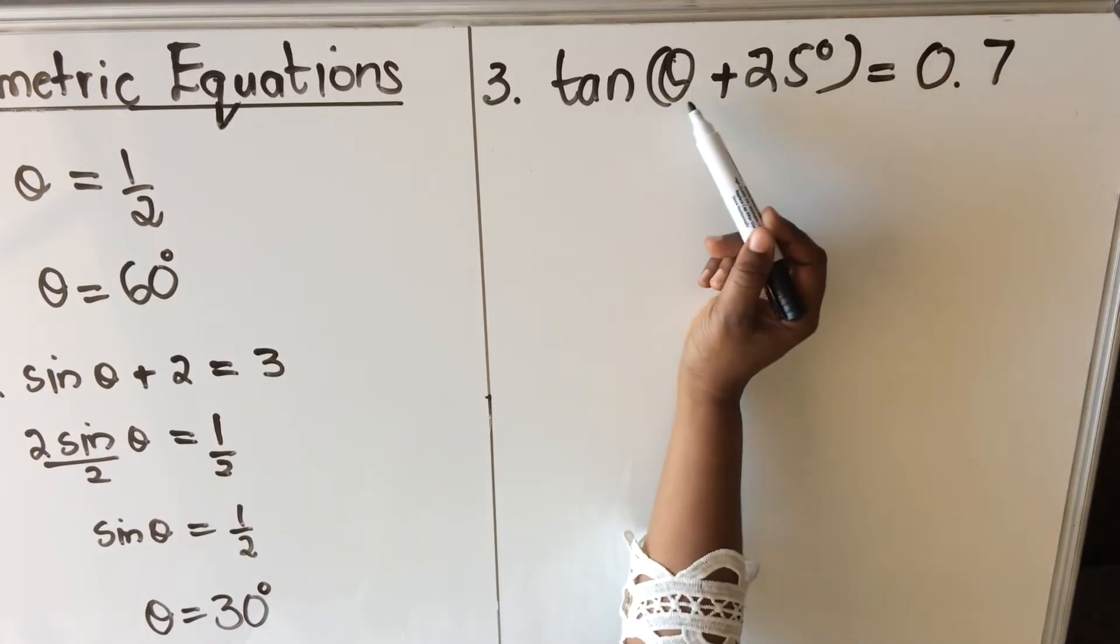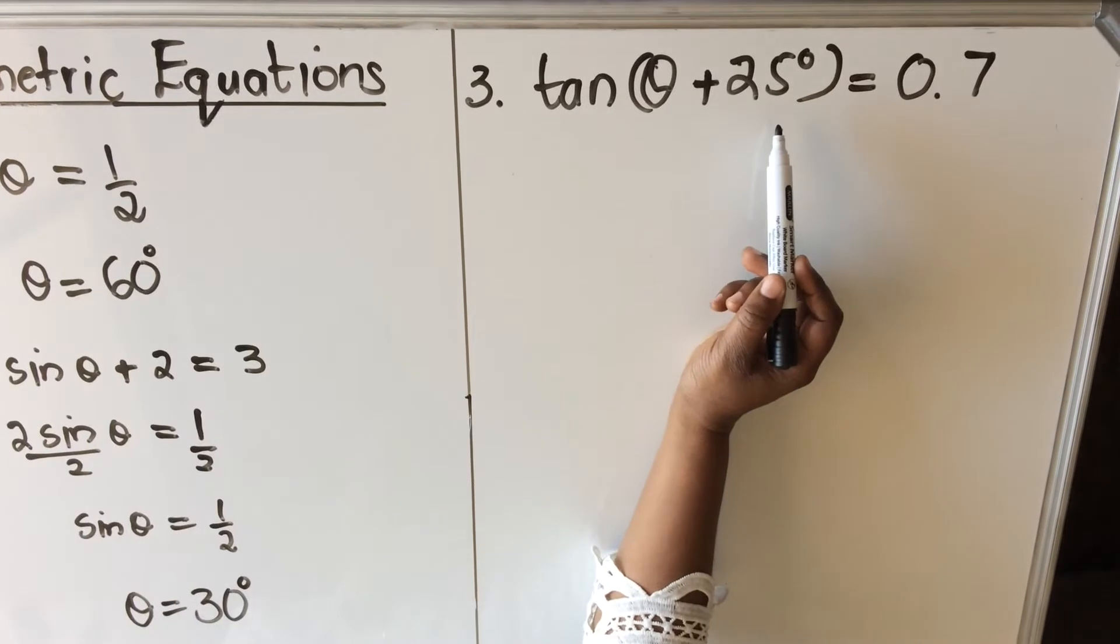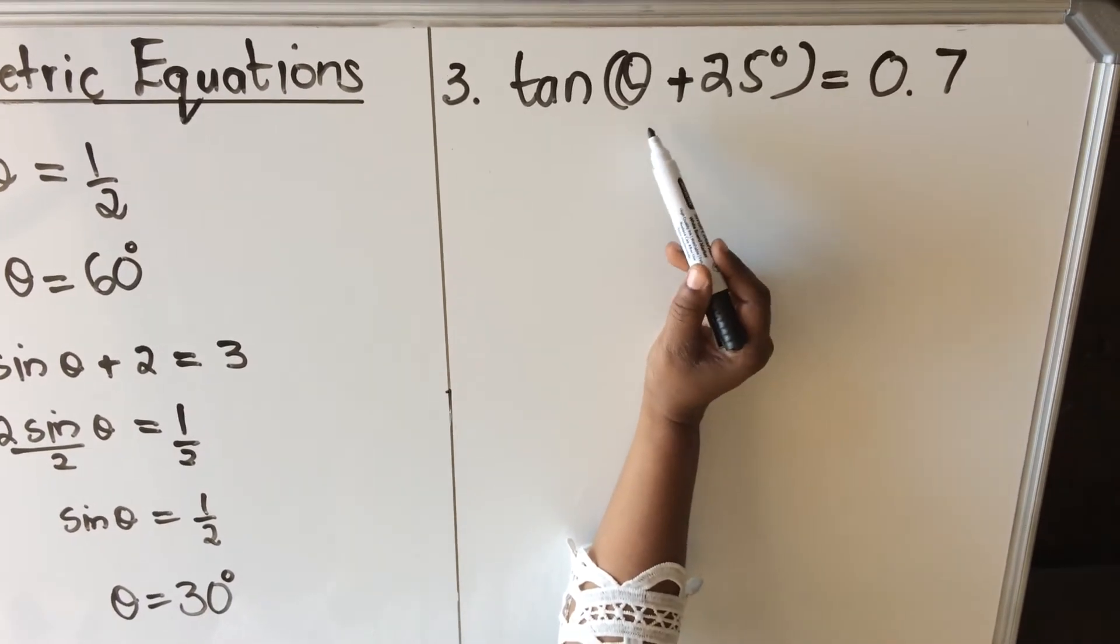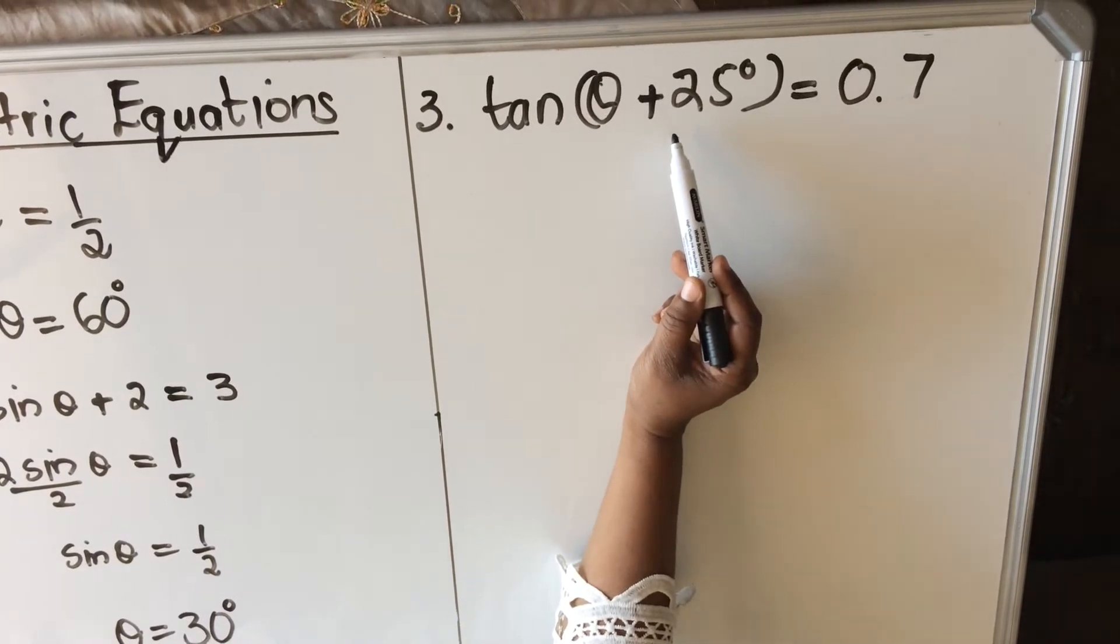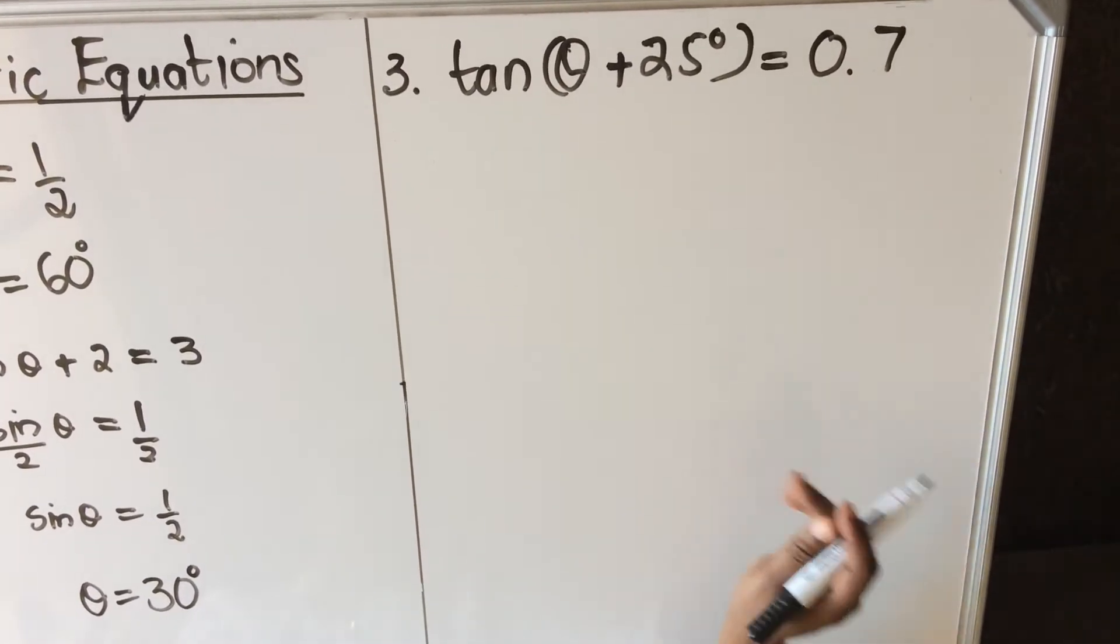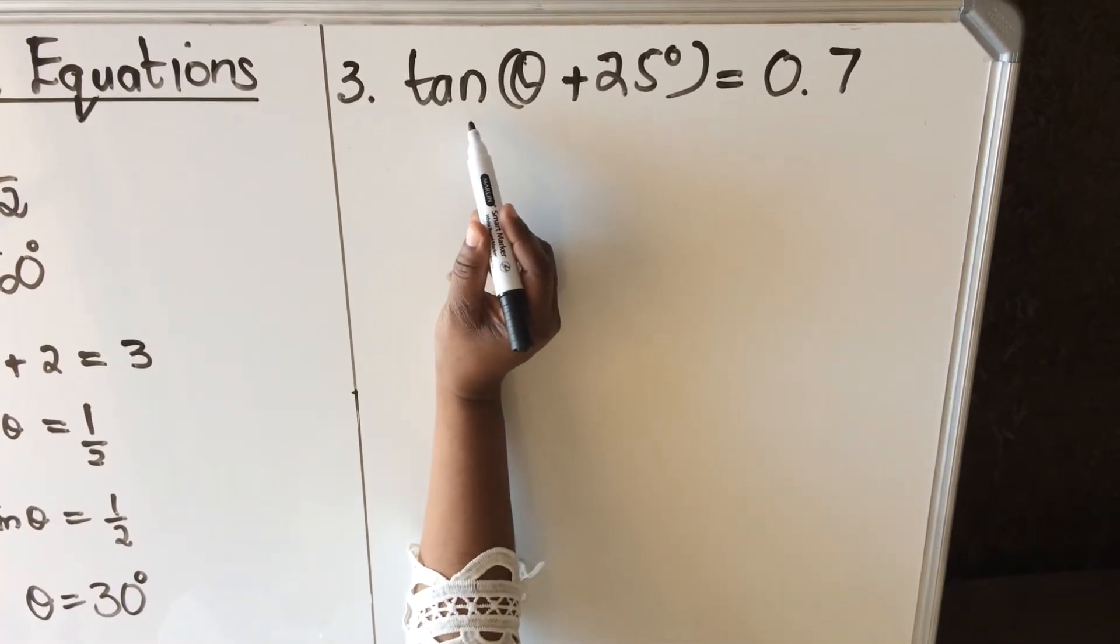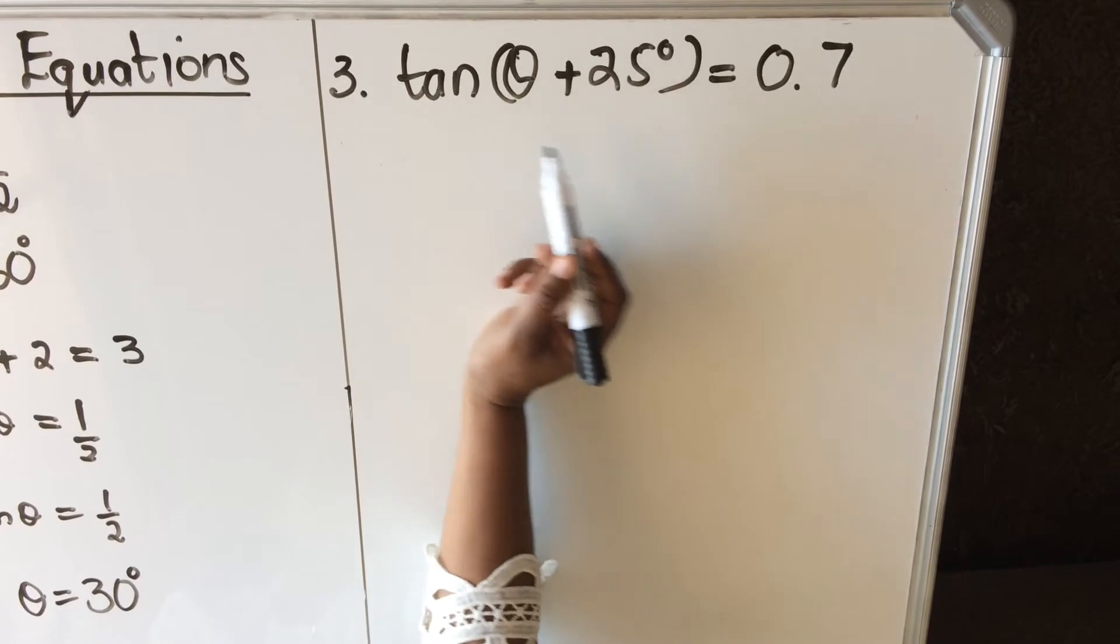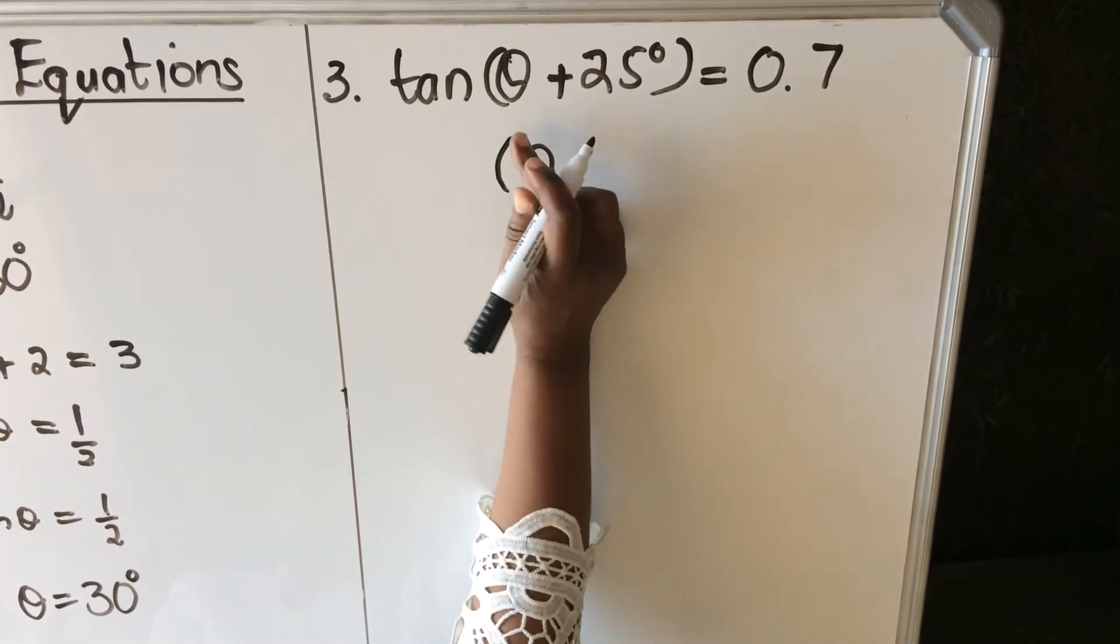Another thing: the 2 is a number, not in degrees. The 25 is in degrees, it is an angle. So my angle is the whole thing, theta plus 25. Why is that important? You do not, you should not, you must not fiddle with the angle. Leave the angle as it is and then solve the angle later.